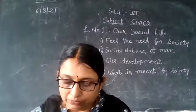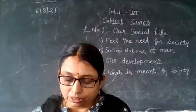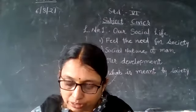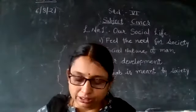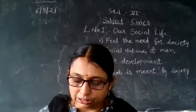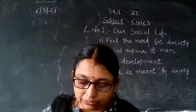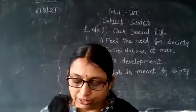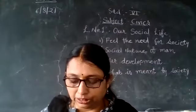We also have some emotional needs. For example, to feel secure is an emotional need. When we are happy, we wish to share our happiness with others. Similarly, when we are sad, we wish to have somebody with us. We like the companionship of our family members, relatives and friends.